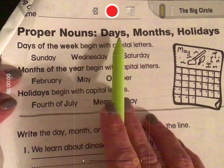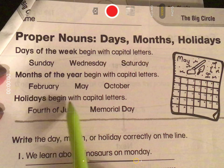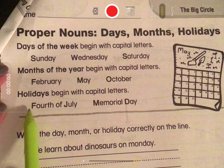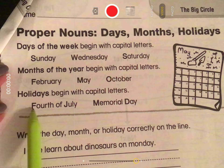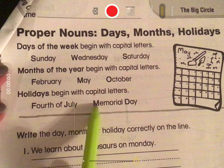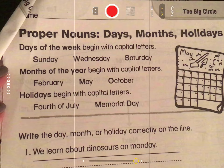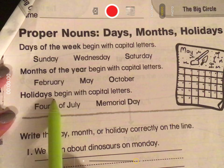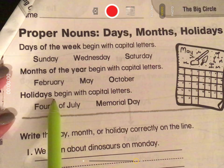Proper nouns begin with capital letters, such as Sunday, Wednesday, and Saturday. Months of the year begin with capital letters, such as February, May, and October. Holidays begin with capital letters too — the 4th of July. We only capitalize the F and the J, not a small word like 'of.' And Memorial Day — the first letter of each of those words is capitalized.